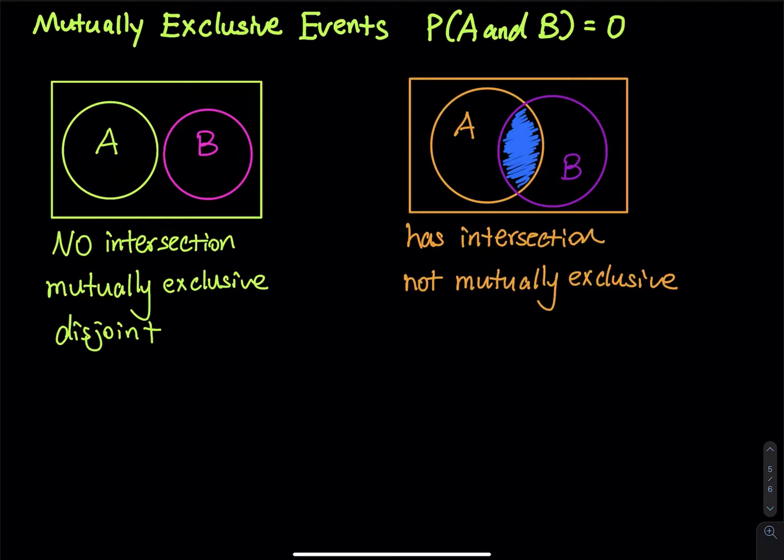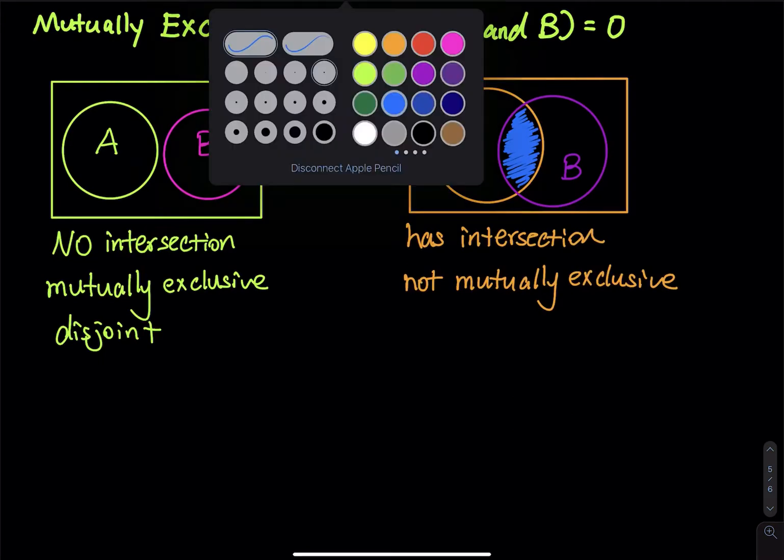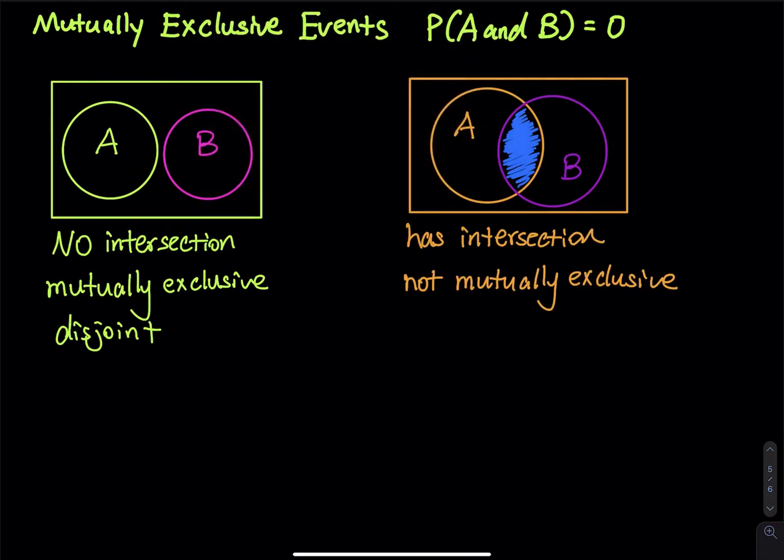Let's take a look at the difference of the principle of inclusion and exclusion. So for mutually exclusive, you have A or B. So that is just equals to the probability of A plus the probability of B. You don't need to minus the probability of A and B because probability of A and B equals zero. You don't need to subtract that zero. You can subtract that zero. That doesn't change anything.